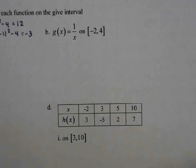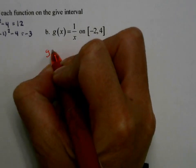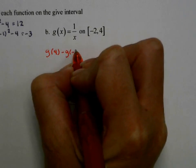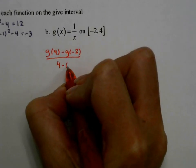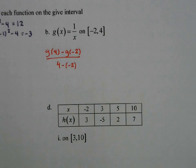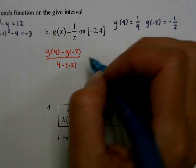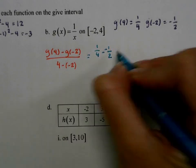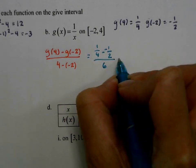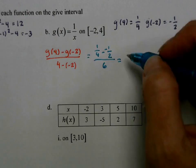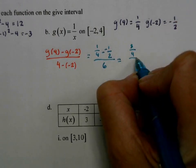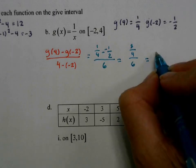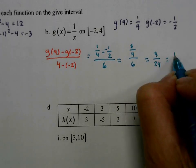Next one, g of x equals 1 over x. So now my function is g. I'm going to say g of 4 minus g of negative 2 over 4 minus negative 2. Do my side calculations. g of 4 is 1 fourth, g of negative 2 is negative 1 half. I'll go ahead and plug those in. So we have 1 fourth minus a negative 1 half over 6. If we add 1 fourth and 1 half, we get 3 fourths, which is 3 over 24 or a reduced 1 eighth.